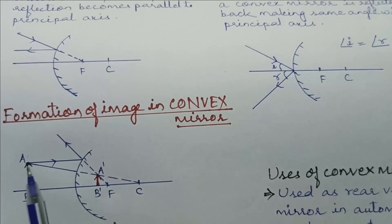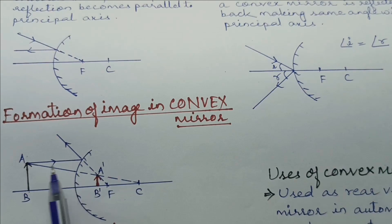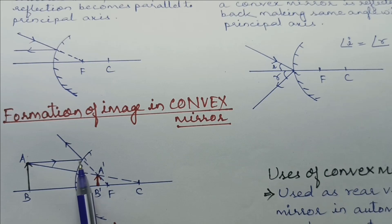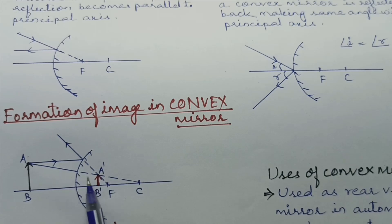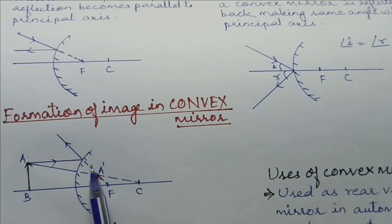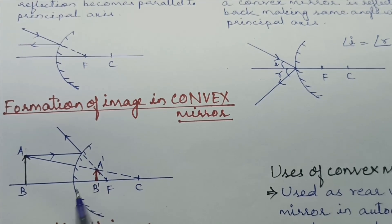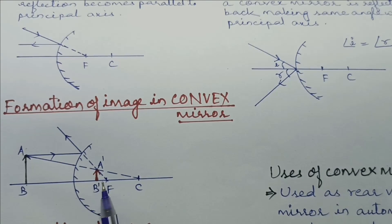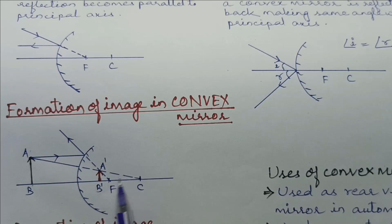Formation of image in case of convex mirror: Consider two light rays coming towards the reflecting surface of the convex mirror. The first ray coming parallel to principal axis after reflection appears to be coming from focus. The second ray going towards center of curvature is reflected back along the same path. If we extend both rays in the backward direction they meet at a point — the position where image is formed. The image is formed behind the mirror so it is virtual and erect, and the size is diminished. Even if we move the position of the object towards or away from the pole, the image position remains behind the mirror.